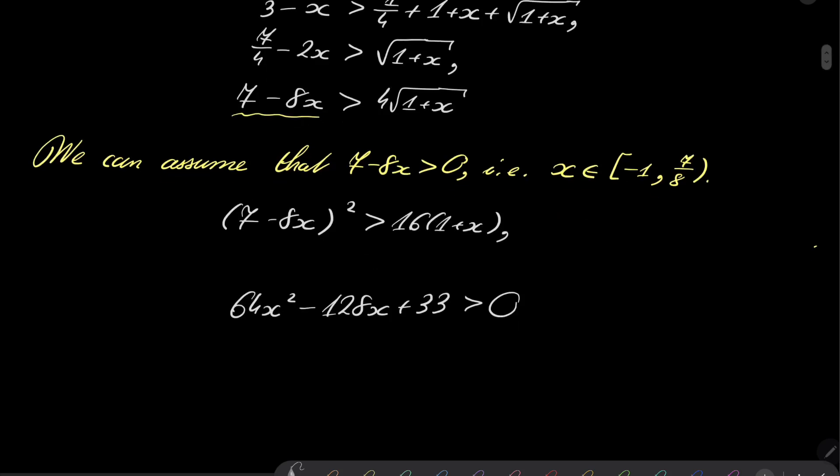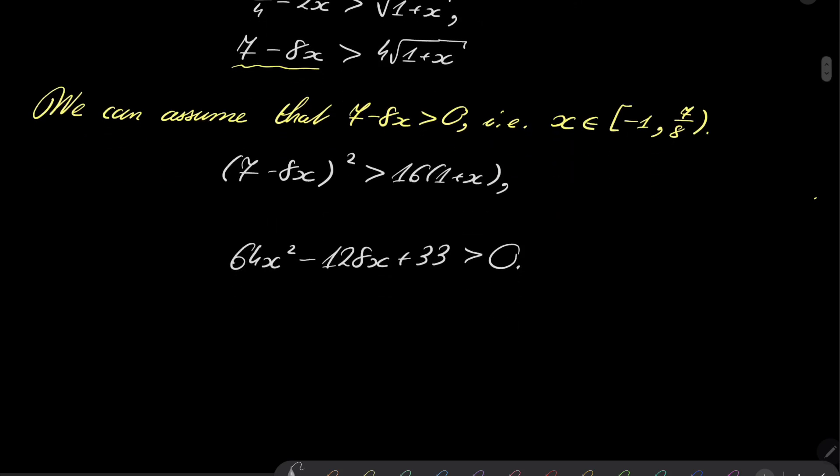this is a quadratic inequality, which you can solve by using the quadratic formula. It turns out that the graph of this function is a parabola with roots at 1 minus square root of 31 over 8, and 1 plus square root of 31 over 8.